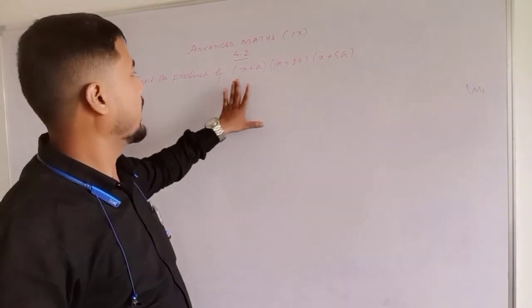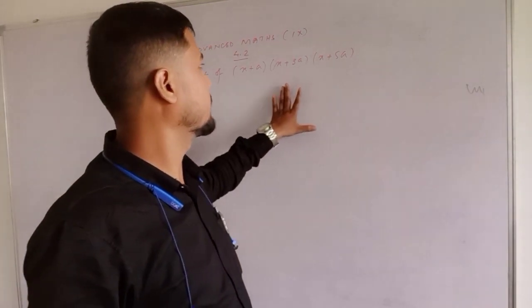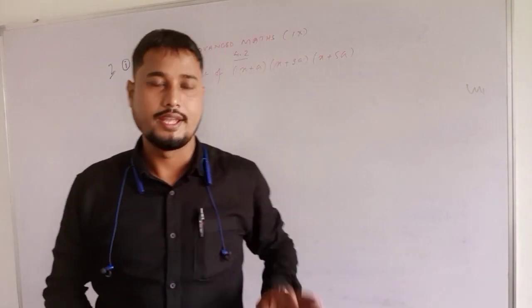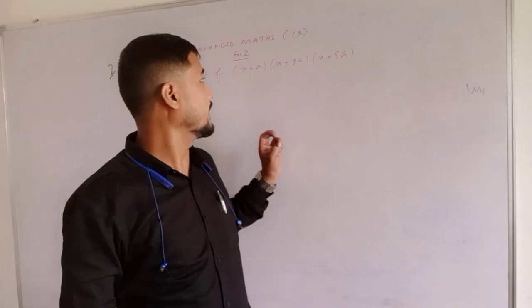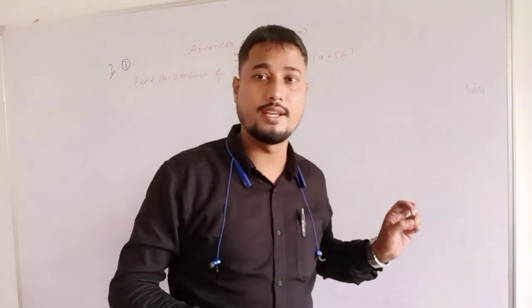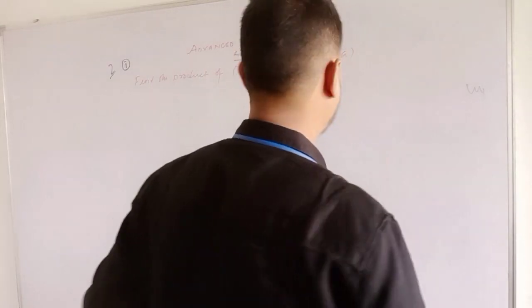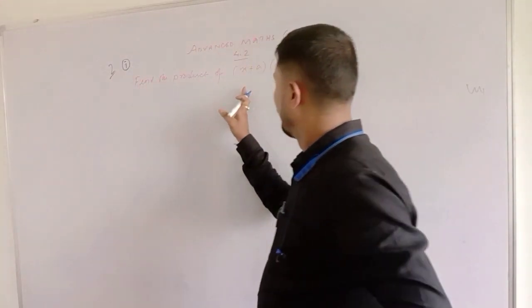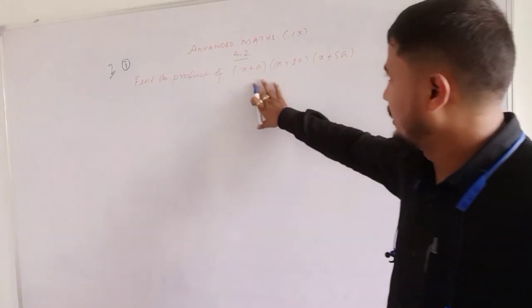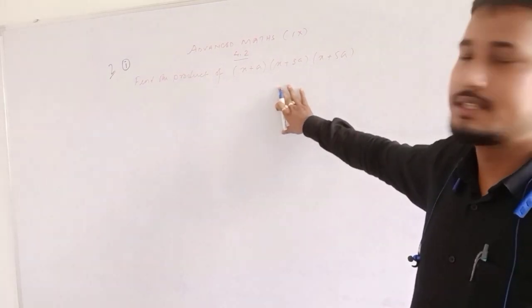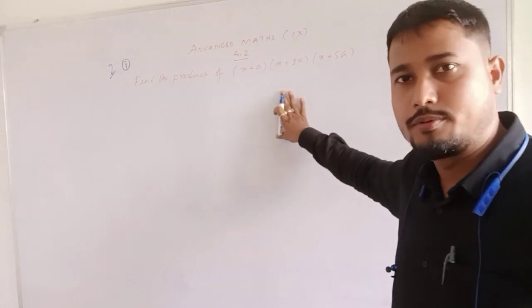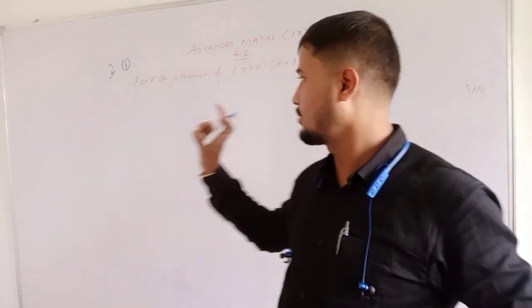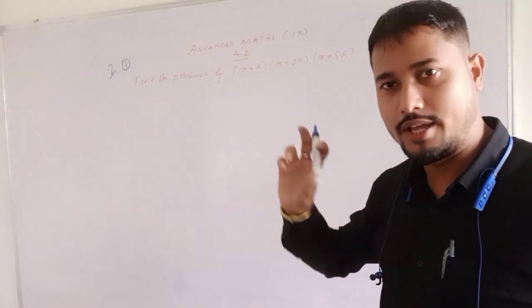Find the product of x plus a into x plus 3a into x plus 5a. Using the identity, find the product of x plus a into x plus b into x plus c.